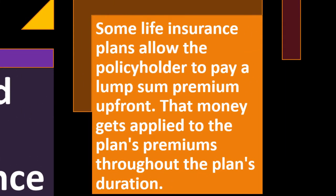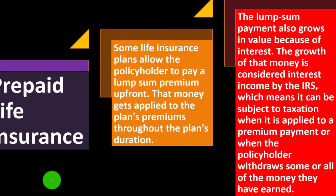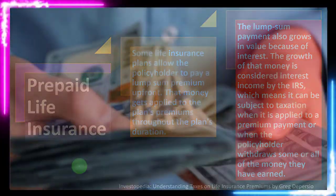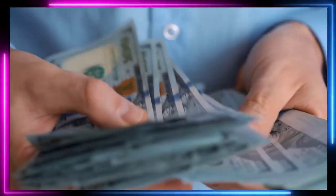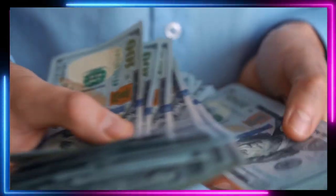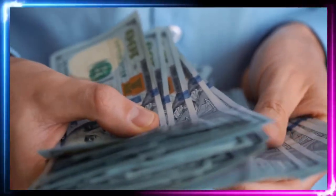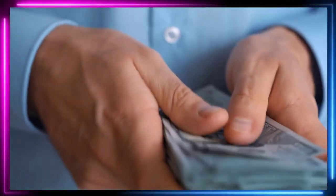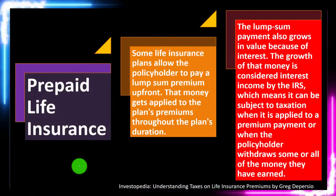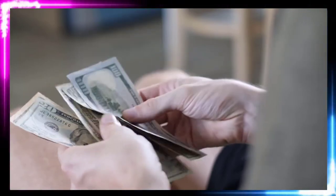Some life insurance plans allow the policyholder to pay a lump sum premium up front, and that money gets applied to the plan's premiums over the plan's duration. The lump sum payment also grows in value because of interest. The growth of that money is considered interest income by the IRS, which means it can be subject to taxation when it is applied to a premium payment or when the policyholder withdraws some or all of the money they have earned. You would expect at least tax deferral on the growth — the interest on the cash value — with that growth subject to tax at some future point when it is used.